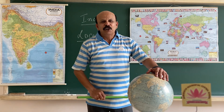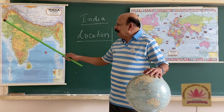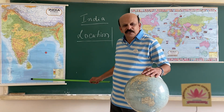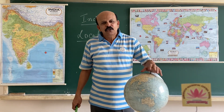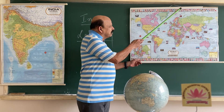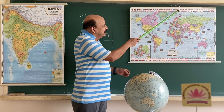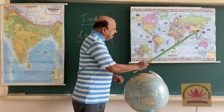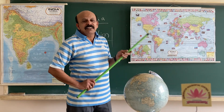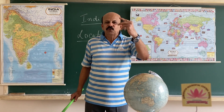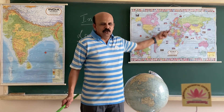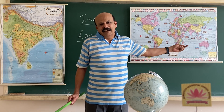The map has got only the width and the length, so that is why it is called a two-dimensional map. You can see one map here — you have the length and the breadth, the length and width. When you talk in terms of this, it is called two-dimensional — two faces. Two faces of anything is called two-dimensional.